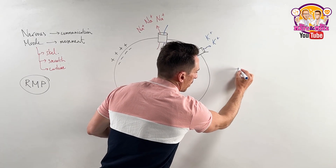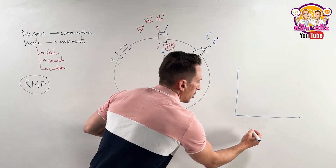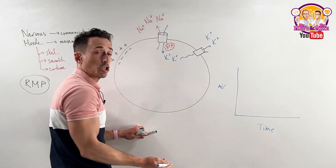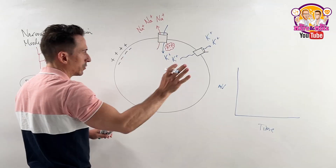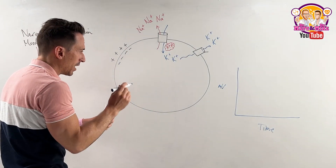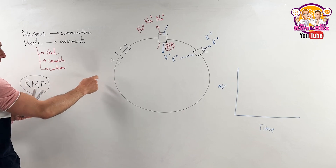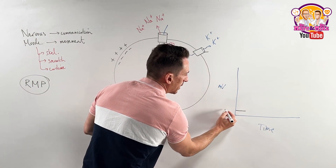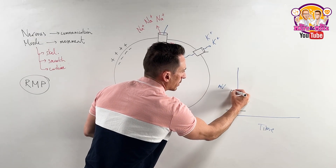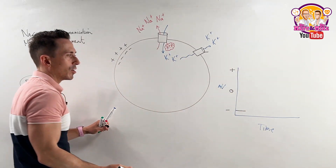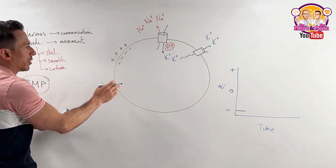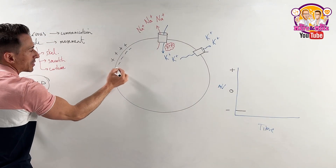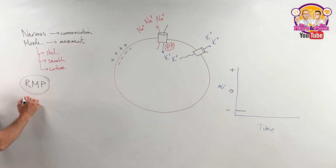Let's draw this up on a graph, with time on the x-axis and millivolts on the y-axis. Our resting membrane potential sits down here in the negative range — negative at the bottom, neutral in the middle, positive at the top. This charge difference has a term: it's called polarized. So right now the cell is polarized and sitting at rest.